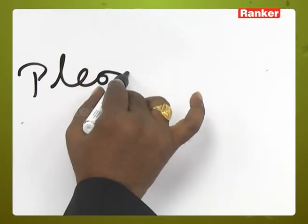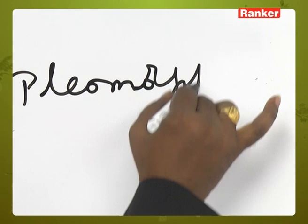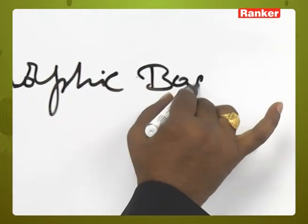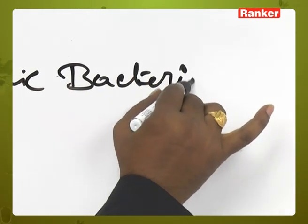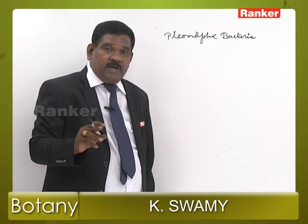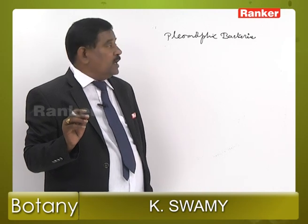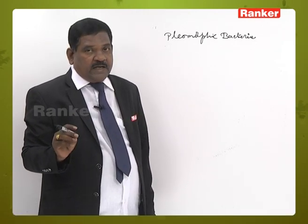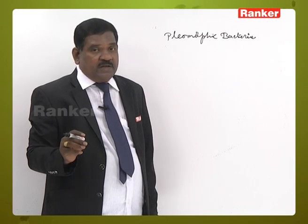Bacteria change their shape frequently based on changes in environment and changes in nutrients. This is called Pleomorphic Bacteria, and that phenomenon is called Pleomorphism.